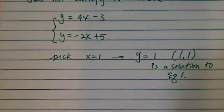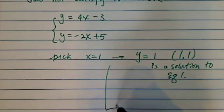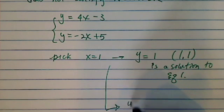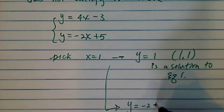(1,1) is a solution to equation 1, right? And then we'll pick the same x for the second equation. We'll have y equals minus 2 plus 5.